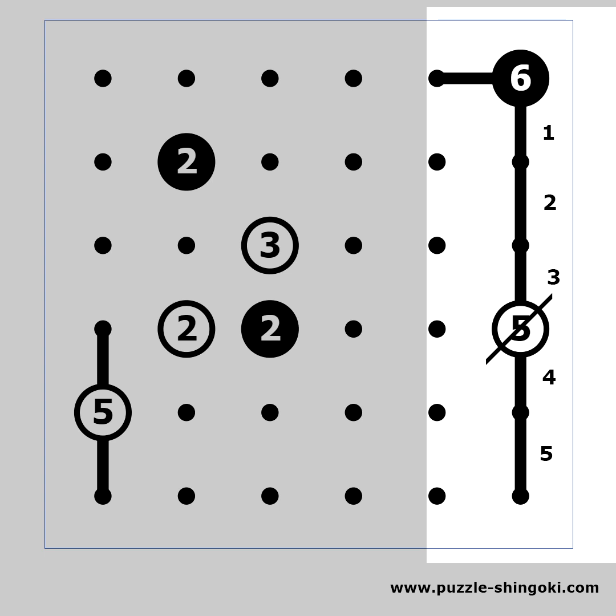But if we take a look at the 6 in the corner we'll find out that it has a 5 steps line going down and a 1 step line going to the left. This means that the 6 clue is also completed.